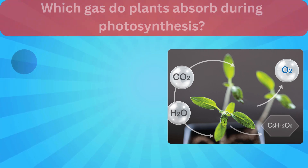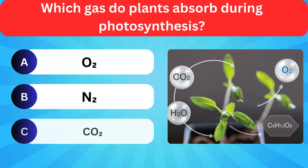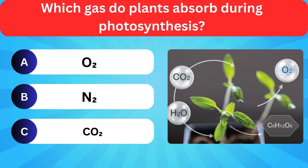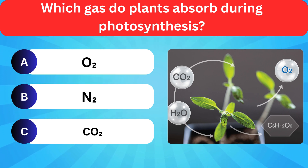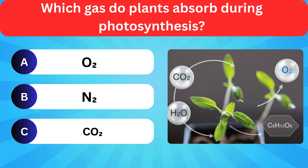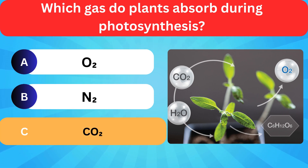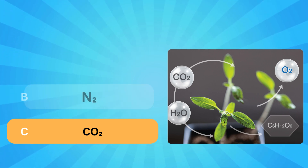Which gas do plants absorb during photosynthesis? Options: Oxygen, Nitrogen, Carbon dioxide. Correct answer is carbon dioxide.